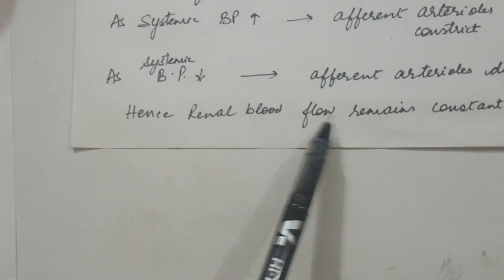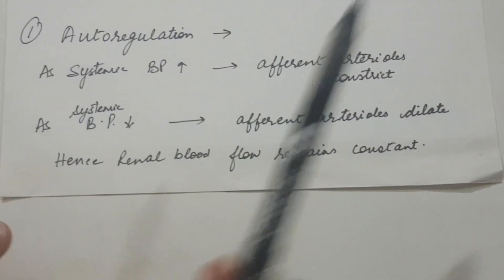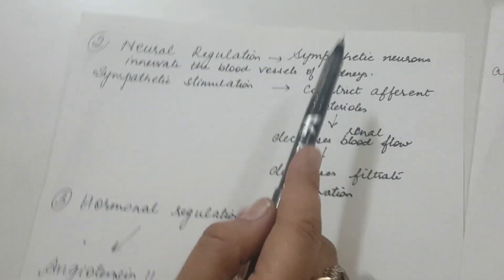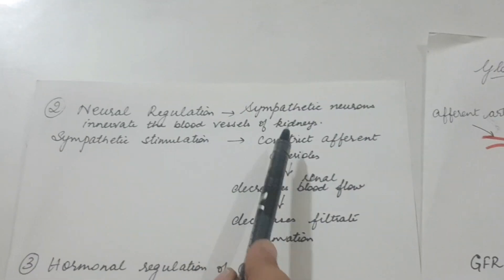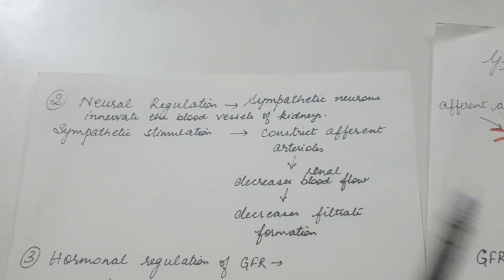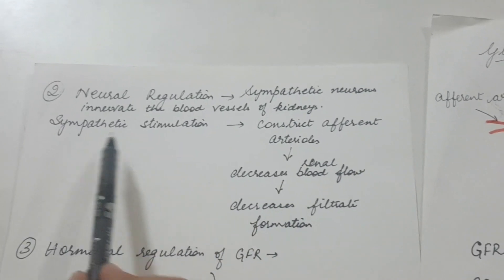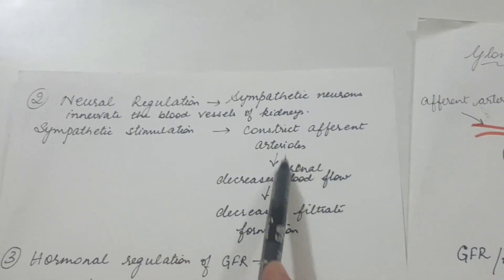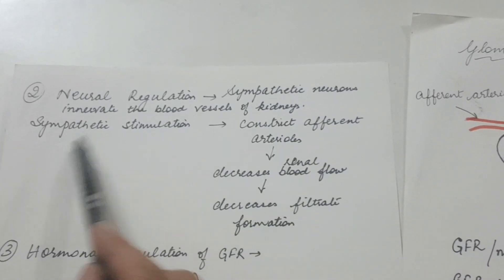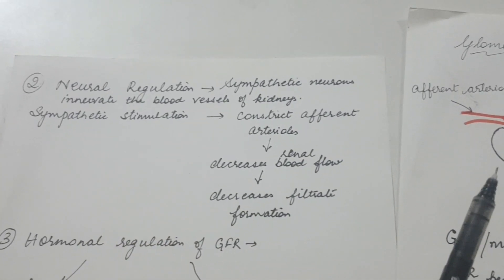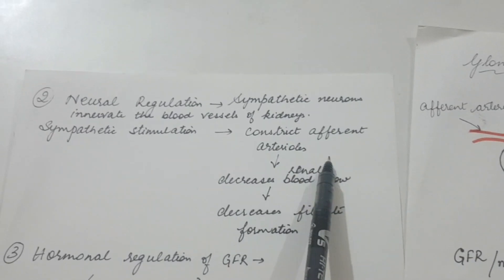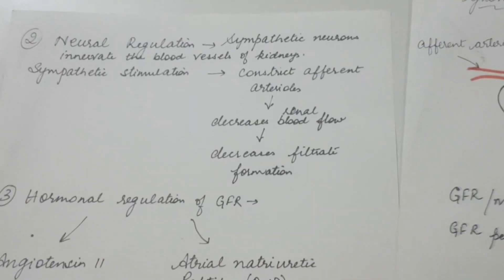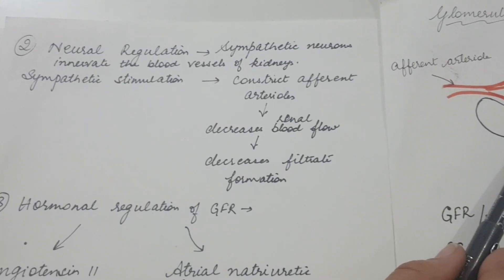This ensures that the renal blood flow remains constant. The second is neural regulation. This is the regulation where sympathetic neurons innervate the blood vessels of the kidney. The efferent arterioles constrict under sympathetic stimulation, which usually occurs in stress conditions. So when the efferent arterioles constrict, the blood flow entering the glomerulus will be reduced.